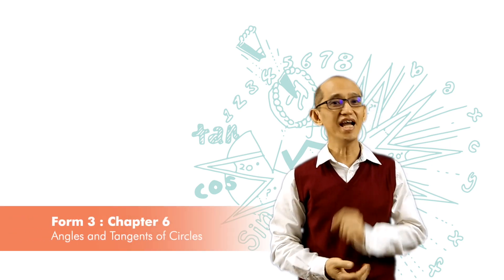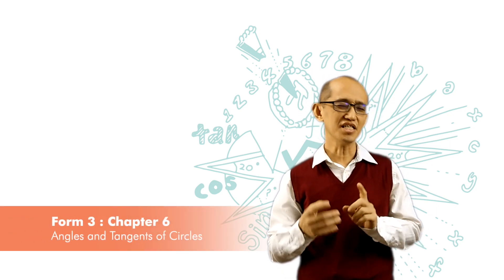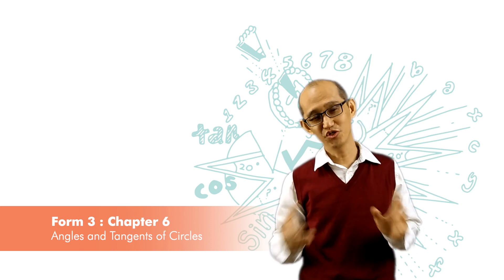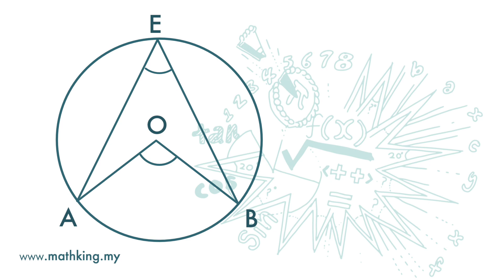We will continue on with angles in circles. Today's lesson is slightly more complicated, so do pay attention. First, let's look at this diagram. We have an angle at the circumference and an angle at the center, both subtended from the same arc. In such a case, the size of the angle at the center is always two times the size of the angle at the circumference. If the angle at the circumference is x, then the angle at the center is 2x. Now let's see what happens when the arc gets larger.